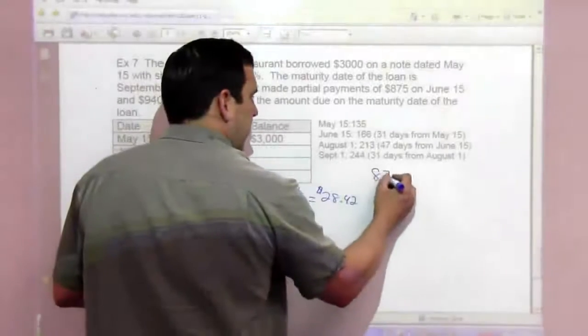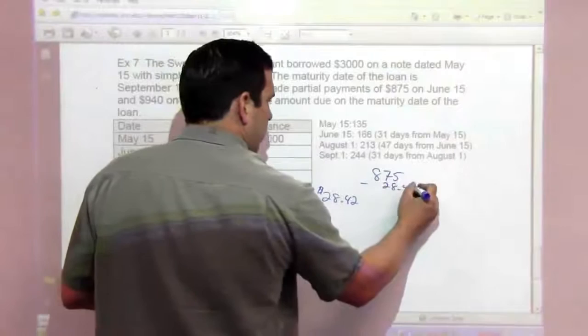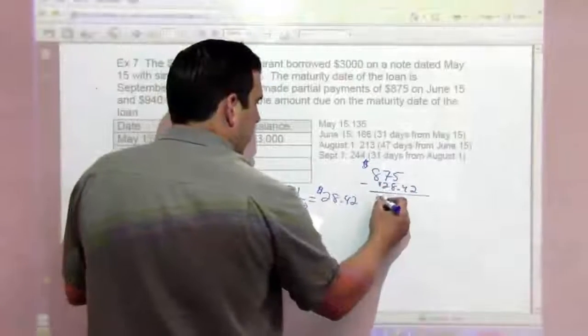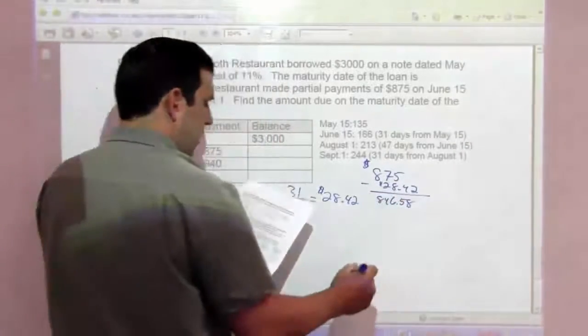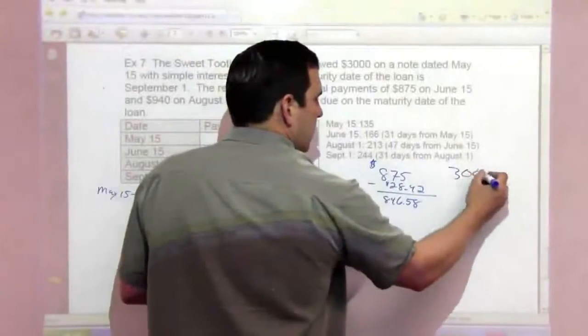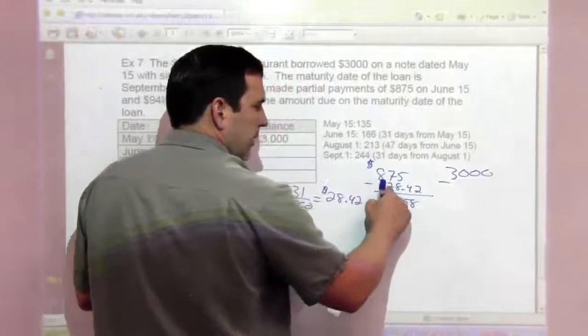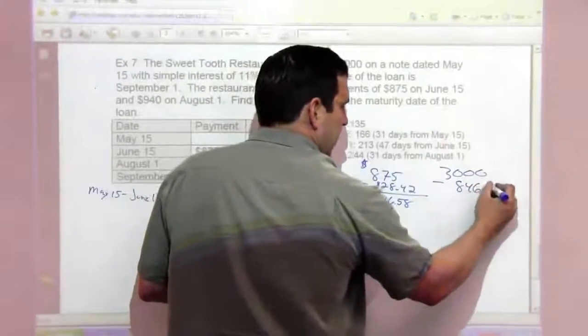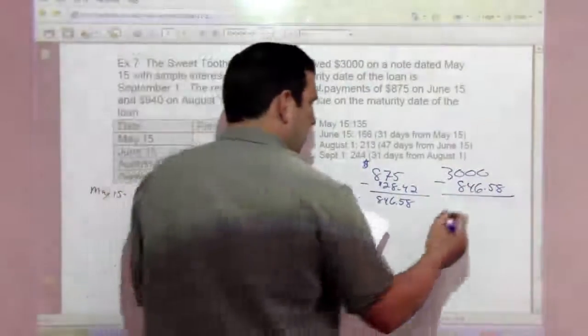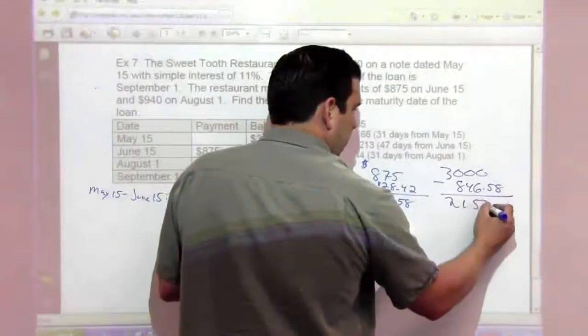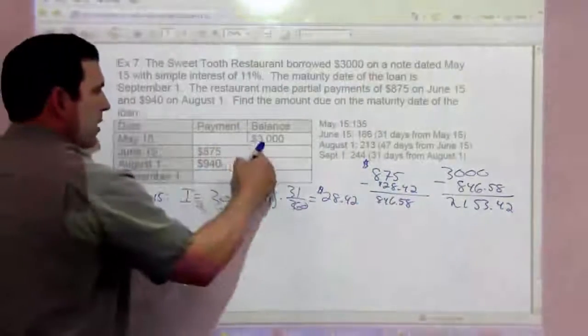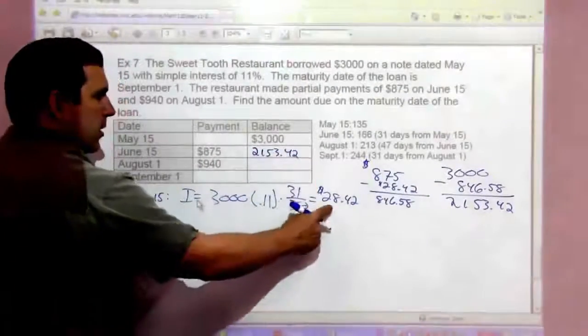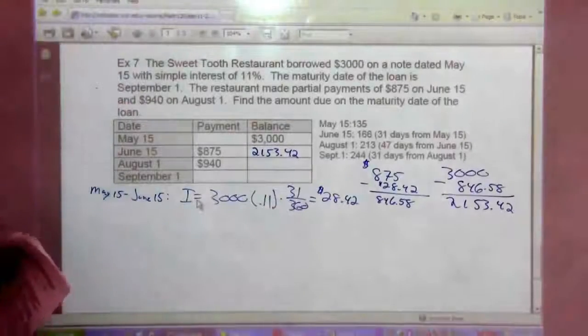So from the $875, we subtract $28.42, and we have $846.58 left. So from the $3,000, we subtract what's left of the principal - that was interest, that's what's left of the principal - $846.58, and we have $2,153.42. So the balance after making this payment is $2,153.42 because $28.42 was paid in interest.